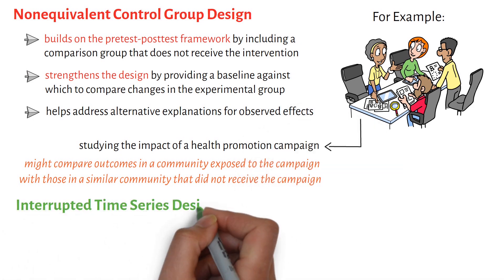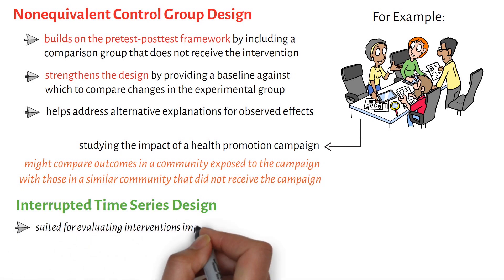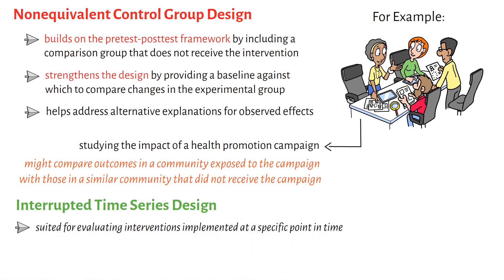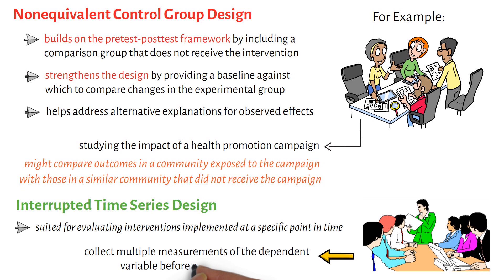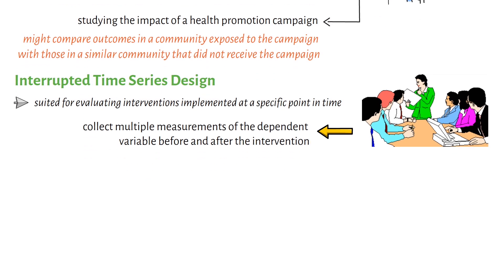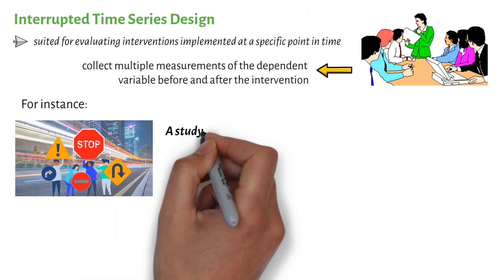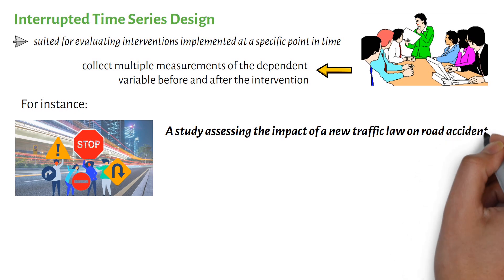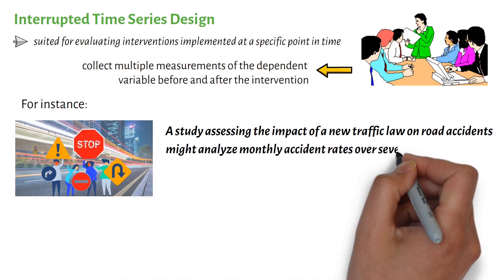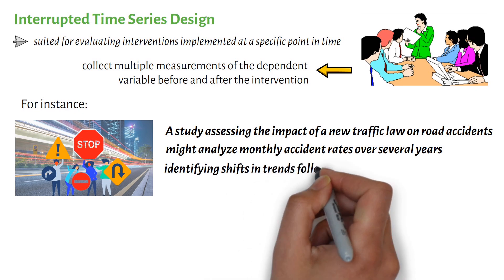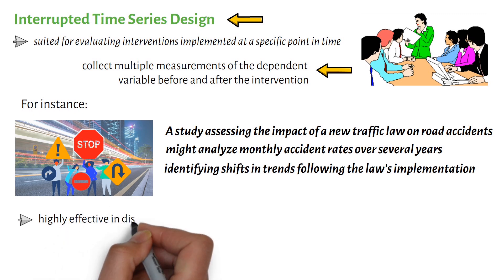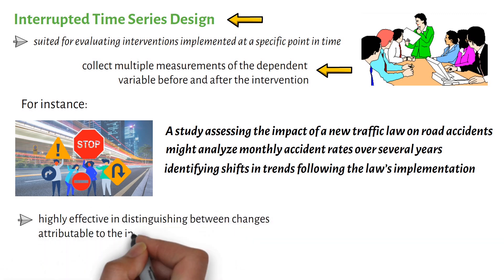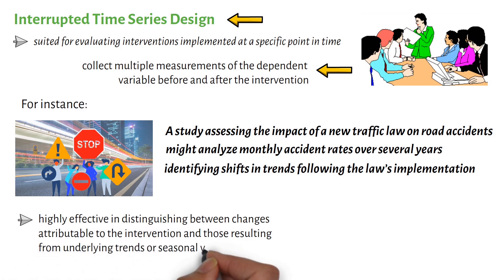The interrupted time series design is particularly suited for evaluating interventions implemented at a specific point in time. Researchers collect multiple measurements of the dependent variable before and after the intervention, creating a detailed picture of trends over time. For instance, a study assessing the impact of a new traffic law on road accidents might analyze monthly accident rates over several years, identifying shifts in trends following the law's implementation. This design is highly effective in distinguishing between changes attributable to the intervention and those resulting from underlying trends or seasonal variations.